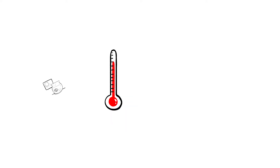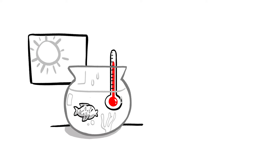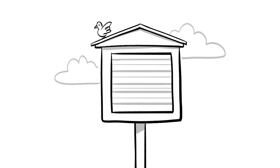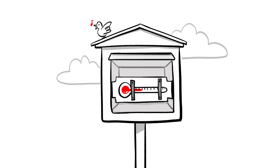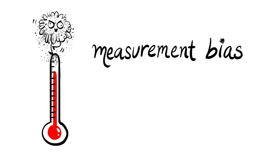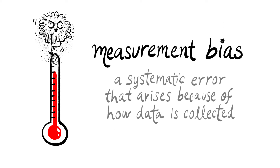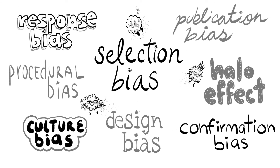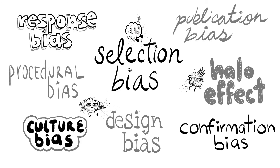For example, even an accurate thermometer will give the wrong reading if it's placed in direct sunlight or held in your hand. To avoid these biases, weather services place their thermometers in specially designed white boxes. These are examples of measurement bias, which is a systematic error that arises because of the way data is collected. But there are many other types of bias that can influence an investigation in different ways.